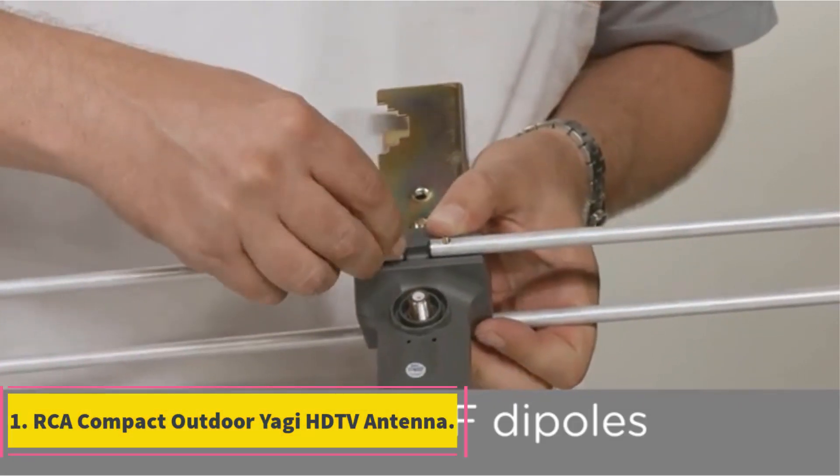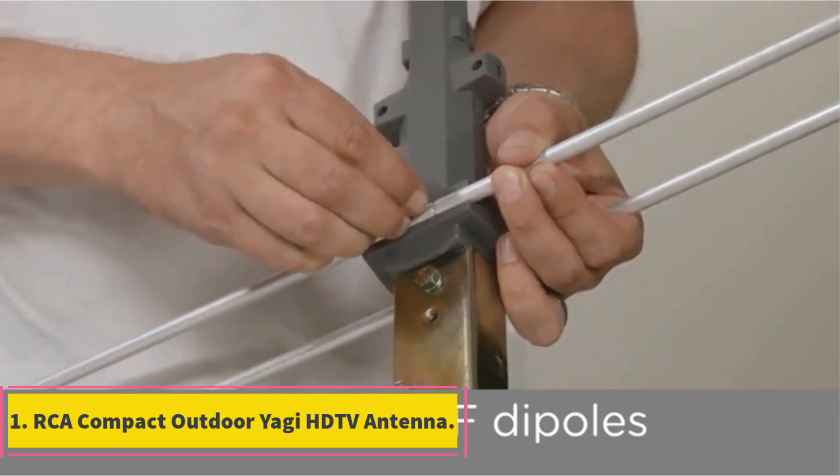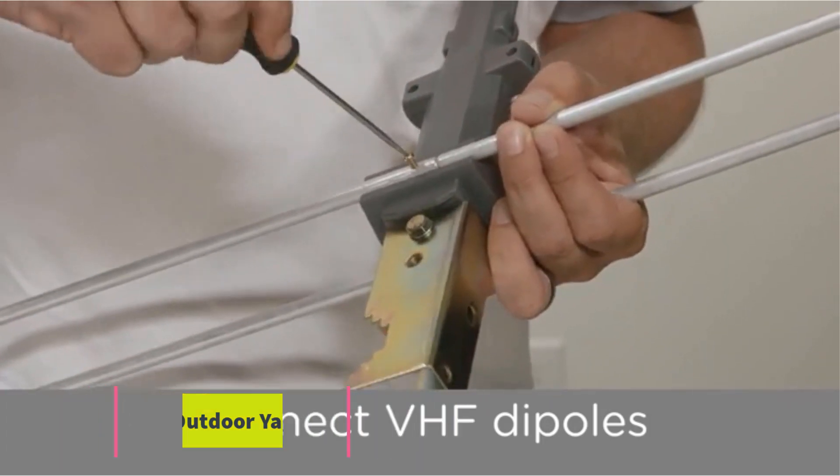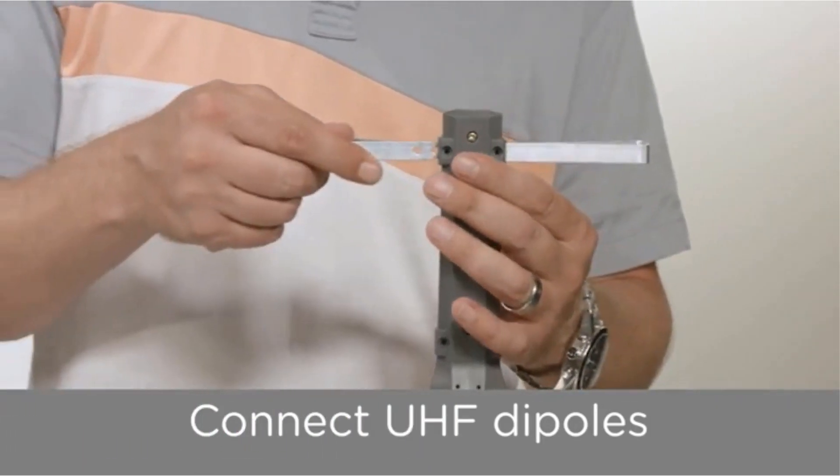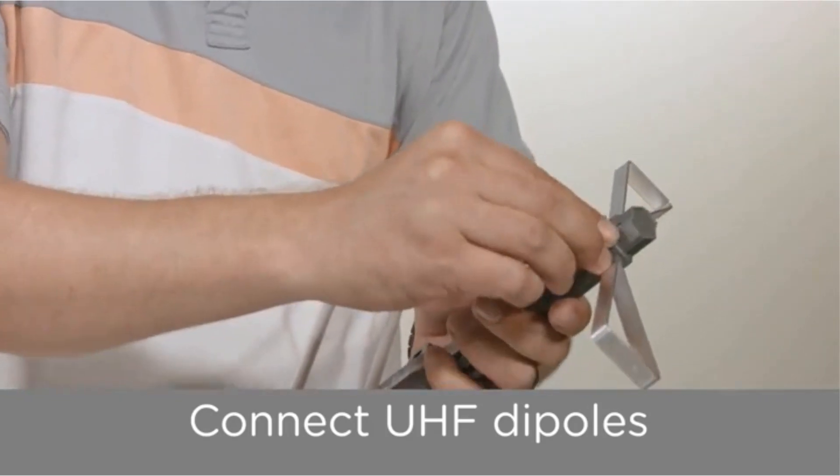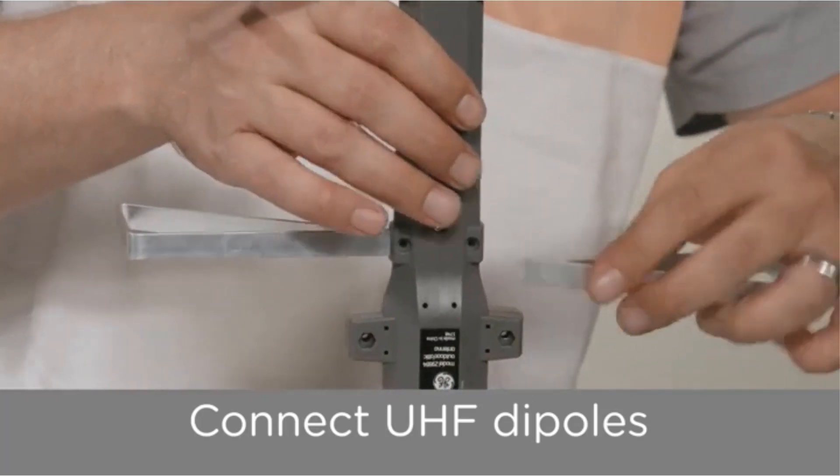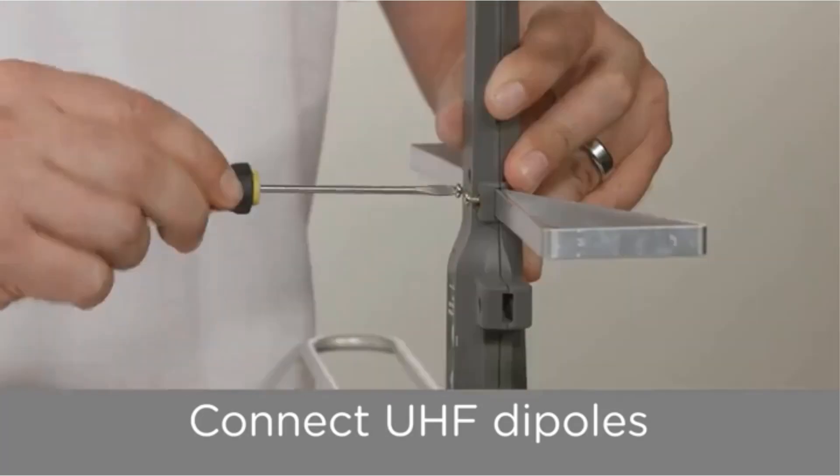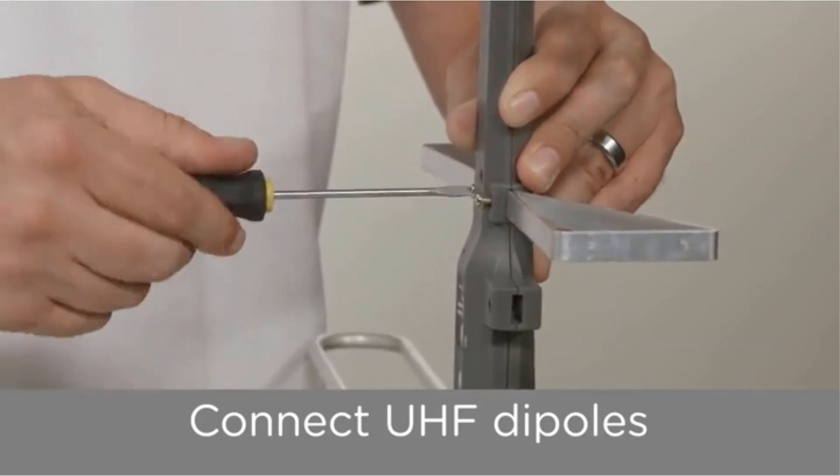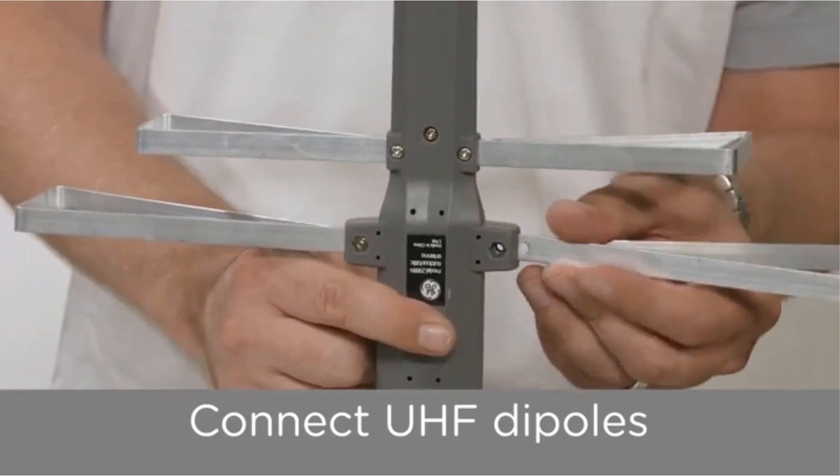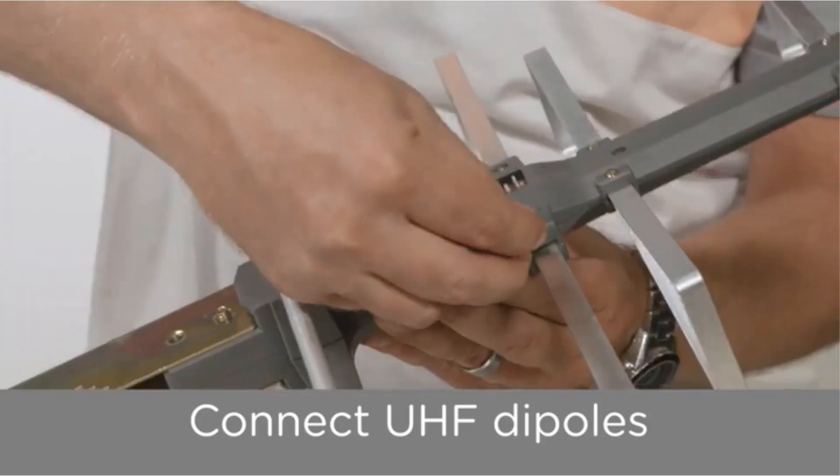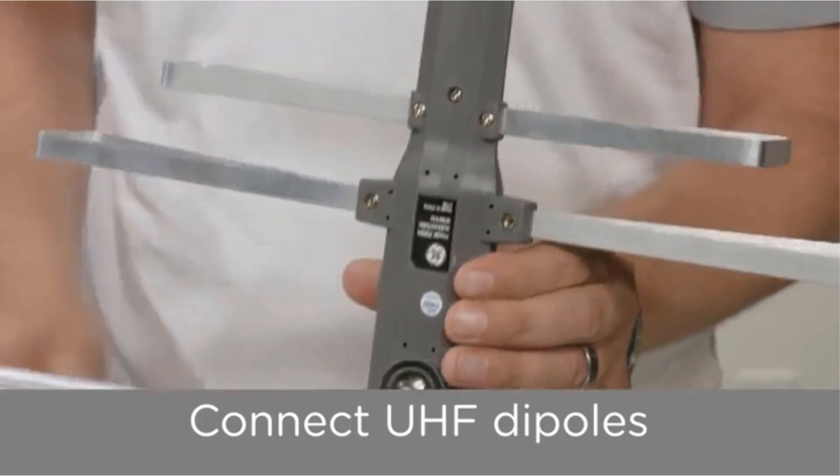Number 1: RCA Compact Outdoor Yagi HDTV Antenna. One thing I really like about this outdoor antenna made by RCA is how easy it is to install. Its pre-assembled design includes elements that just snap in place to lock onto the antenna, and the UHF reflector to give you a stronger signal for ultra-high-frequency programming broadcasts easily unfolds and locks down during installation.